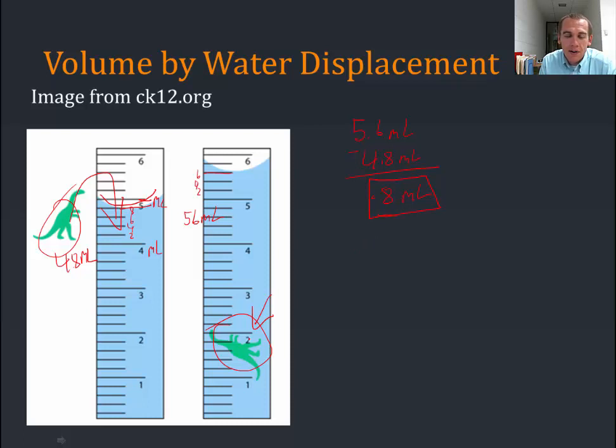So we can say that the volume of that dinosaur is 0.8 milliliters, which is exactly the same thing as 0.8 cubic centimeters. One milliliter is one cubic centimeter.